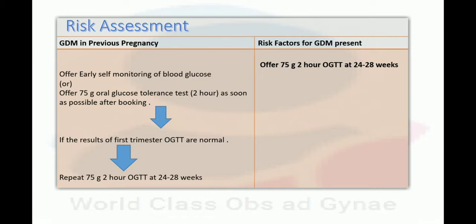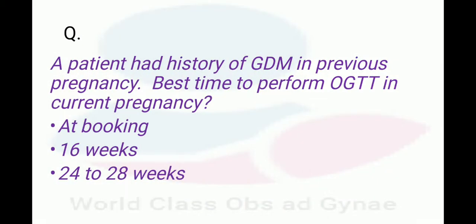For risk assessment, we first offer early self-monitoring of blood glucose, or we offer a 75g OGTT (2-hour) as soon as possible after booking. If the first trimester OGTT results are normal, we repeat the 75g 2-hour OGTT at 24 to 28 weeks of gestation. If the patient has a risk factor for GDM but no previous history of GDM, we offer the 75g 2-hour OGTT at 24 to 28 weeks of gestation.